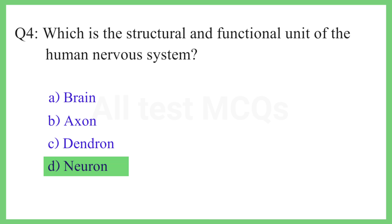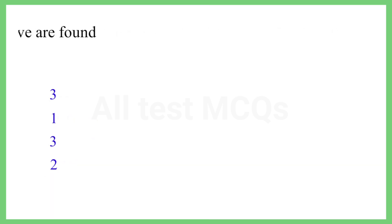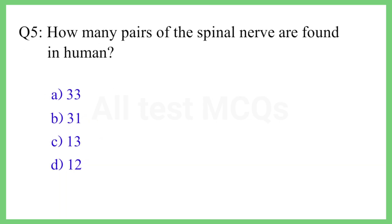Question No. 5. How many pairs of spinal nerves are found in humans? The correct answer is Option B: 31.